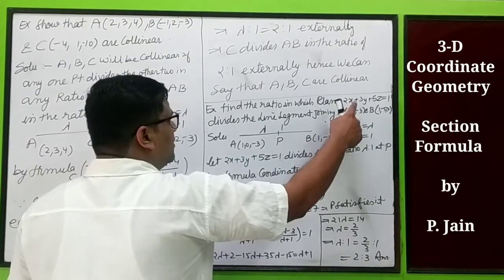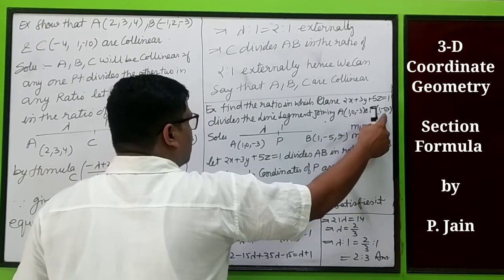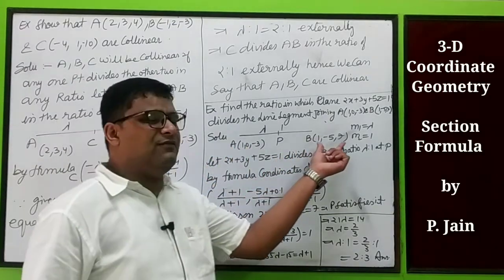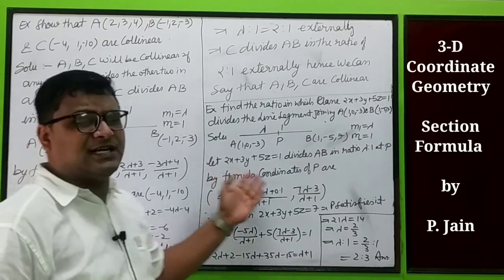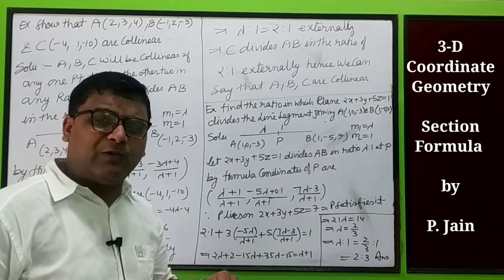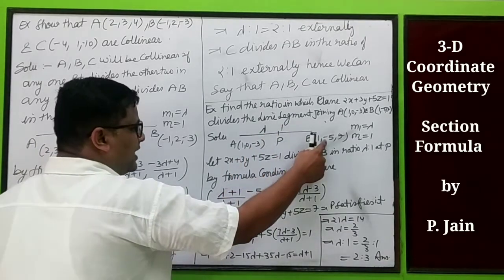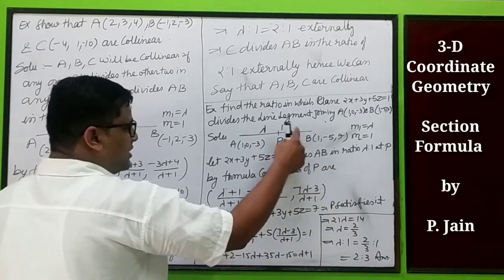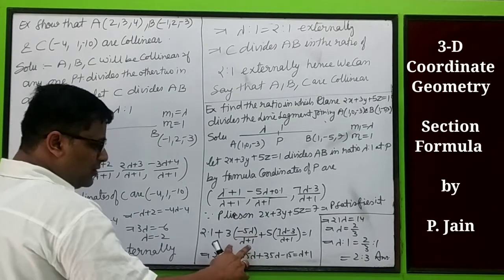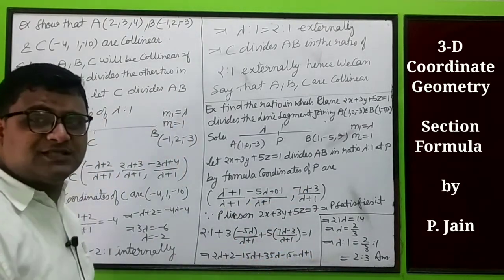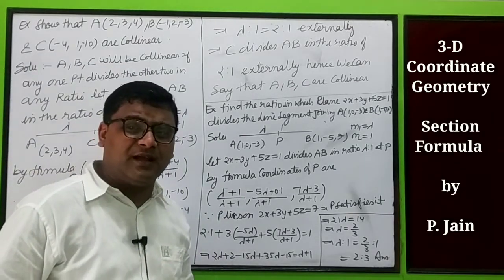Another example: find the ratio in which the plane 2x + 3y + 5z = 1 divides the line segment joining A(1,0,-3) and B(1,-5,7). Let this plane divide it in the ratio λ is to 1 at point P. Coordinates of P are: ((λ×1+1×1)/(λ+1), (λ×(-5)+1×0)/(λ+1), (λ×7+1×(-3))/(λ+1)). Since P lies on the plane, these coordinates satisfy 2x + 3y + 5z = 1. Substituting and solving, we get λ = 2/3. Hence the ratio is 2 is to 3 in which the plane divides the line segment joining A and B.